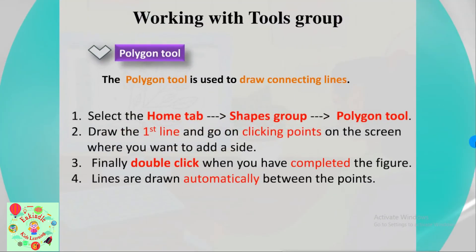The polygon tool is used to draw connecting lines. To use it, select the Home tab, go to the Shapes group, and find the polygon tool. Draw the first line, then keep clicking points on the screen where you want to add a side. Finally, double-click when you have completed the figure — lines are drawn automatically between the points.